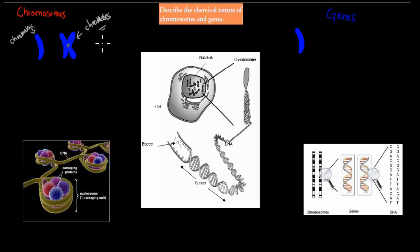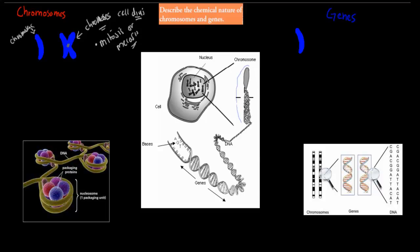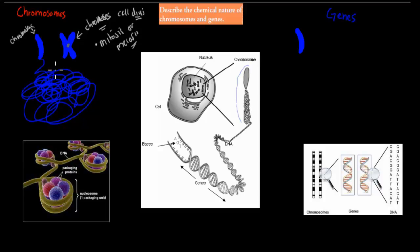Chromosomes can only be seen during mitosis or meiosis — that is, during cell division. If it's not cell division, we won't be able to see them, and that has to do with what chromosomes actually are. If you were to unwind a chromosome, you can see it's actually in an unwound form most of the time — not in that condensed shape, but in a spaghetti-like form all over the nucleus. This form we call chromatin, and we'll see why we have it in this spaghetti form rather than the condensed form.